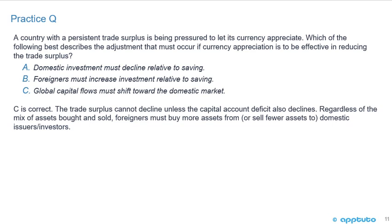Answer C is correct. If currency appreciation is to be effective in reducing the trade surplus, global capital flows must shift towards the domestic market. The trade surplus cannot decline unless the capital account deficit also declines. Regardless of the mix of assets bought and sold, foreigners must buy more assets from or sell fewer assets to the domestic issuers or investors. And that's the last slide for this LOS.